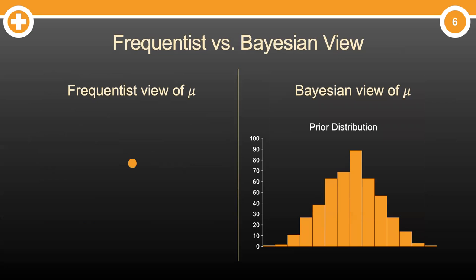So here is the short, short version of the differences between frequentists and Bayesians in statistics. Let's imagine you wanted to estimate something like the population mean, mu, like the average height of people worldwide.